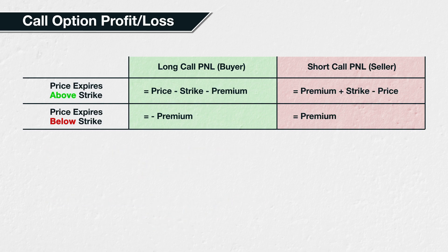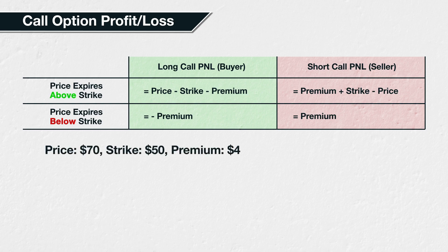As a quick example, assume a trader buys a call option with a strike price of $50 and pays a premium of $4 per share. What is the profit or loss for the buyer and seller if the price at expiry is $70? We have a price of $70, a strike of $50, and a premium of $4. As $70 is greater than $50, the price at expiry is clearly above the strike price, so we will use the top row of formulas.